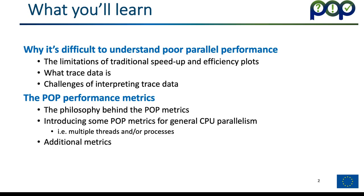I'll cover why it's difficult to analyse performance, based on the limitations of traditional scaling and efficiency plots, and understanding trace data. I'll be talking about what trace data is and why it's difficult to analyse. Then I'll cover the idea behind the POP metrics and introduce the first high-level POP metrics, which are suitable for understanding performance issues when running parallel software over multiple CPU cores and multiple processors. At the very end I'll briefly mention some additional POP metrics which can be covered in additional sessions.